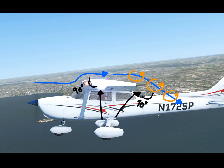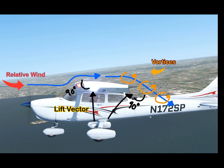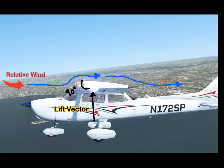Wingtip vortices start dissipating when we get close to the ground. Without vortices pushing the relative wind down, the induced drag produced by the wing will decrease.